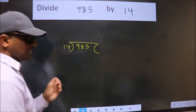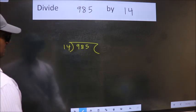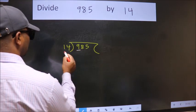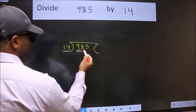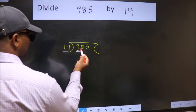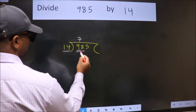This is your step 1. Next, here we have 9. Here 14. 9 is smaller than 14. So we should take two numbers, 98. When do we get 98 in 14 table? 14 sevens, 98.